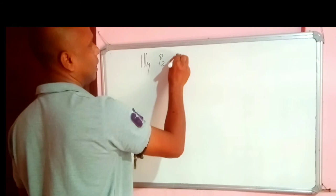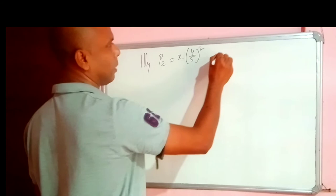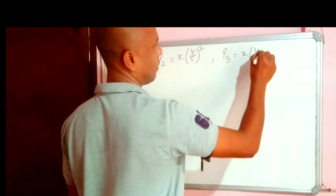P2 will be X 4 by 5 all to the power 2. Since we have P2, 2. And P3 will be X 4 by 5 all to the power 3.